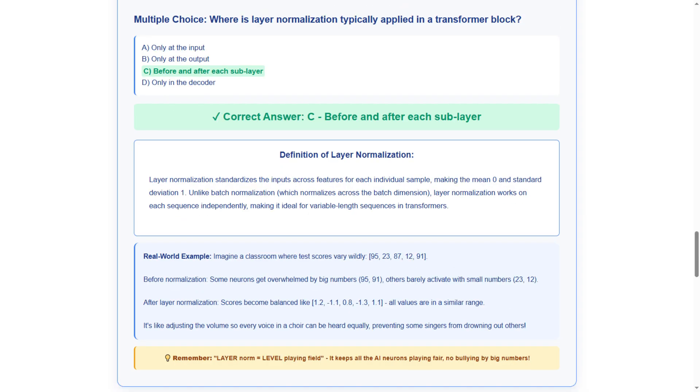Our next question examines normalization placement in transformers. Where is layer normalization typically applied in a transformer block? Option A, only at the input. Option B, only at the output. Option C, before and after each sublayer. Option D, only in the decoder.